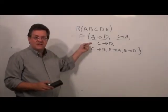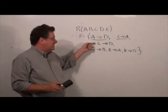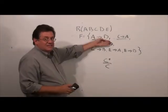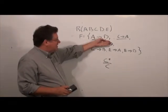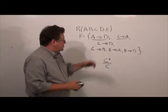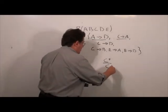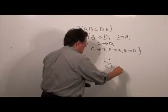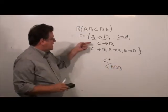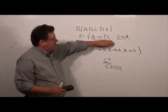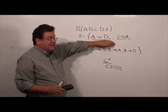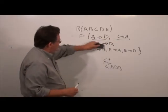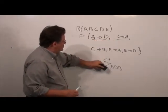Now we check C → D. We compute C closure assuming C → D does not exist. By reflexivity C closure has C. Then C → A gives us A, and A → D gives us D. Also C → B gives us B. So we can reach D without C → D, meaning we can eliminate that functional dependency.